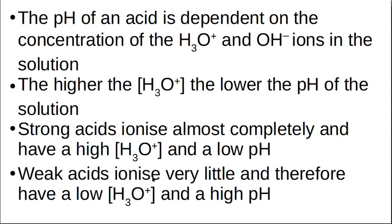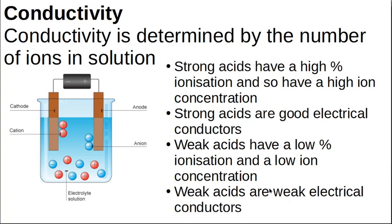Strong acids ionize almost completely and give you a lot of hydronium ions, resulting in a very low pH. Whereas weak acids ionize very little, have a low hydronium ion concentration, and a higher pH. We'll get into how to calculate pH based on hydronium ion concentration later. The next way to tell if an acid is strong or weak is by conductivity — if you run an electrolysis experiment with a battery, electrodes, and an electrolyte solution, an aqueous acid solution is an electrolyte because it contains ions.